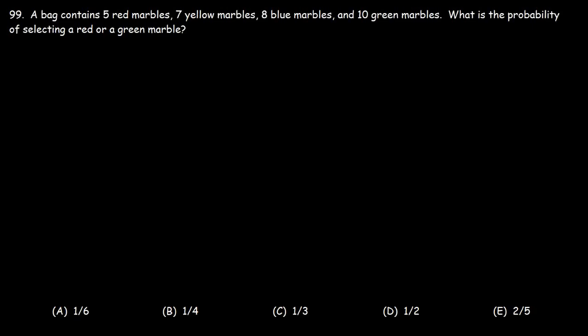Number 99. A bag contains 5 red marbles, 7 yellow marbles, 8 blue marbles, and 10 green marbles. What is the probability of selecting a red or a green marble?